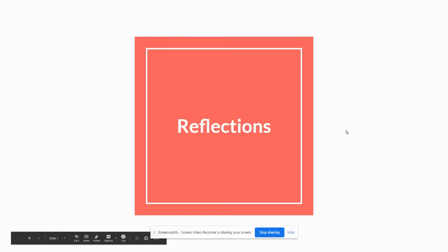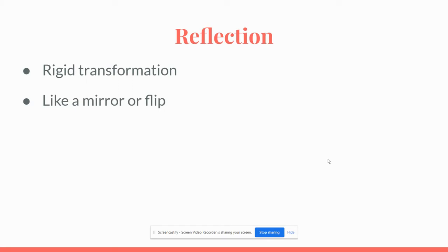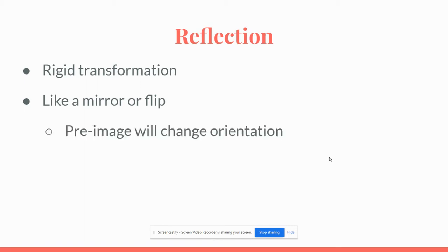This video lesson is going to cover reflections. Reflections are a rigid transformation, just like a translation that we looked at previously. A reflection, if you think about a reflection in a mirror, it flips your image. So the pre-image actually changes its orientation. Unlike a translation where its orientation was the same as before, just in a different spot, now our image will be in a different spot and its orientation will have changed.